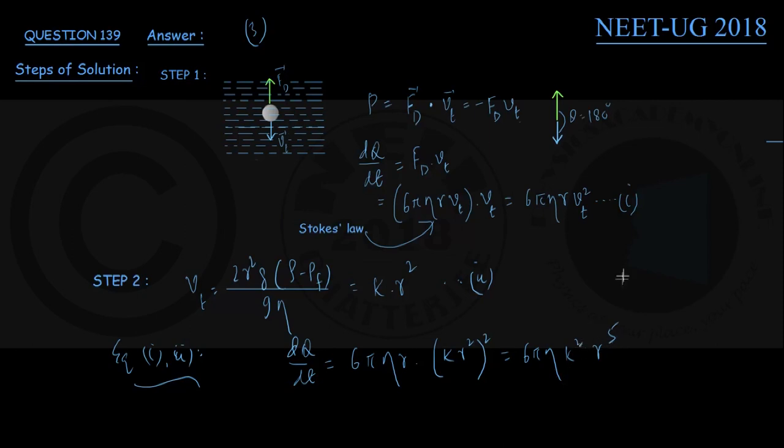And once again, 6πηK² being a constant quantity, we conclude that the rate of heat production dQ/dt must be varying directly as the fifth power of the sphere radius. That is option number three in the question, you choose this one.